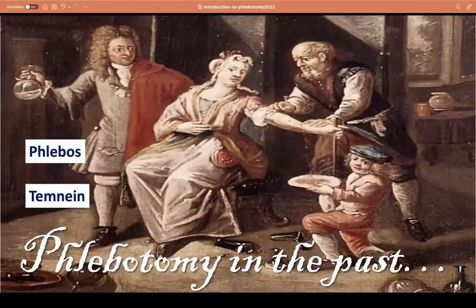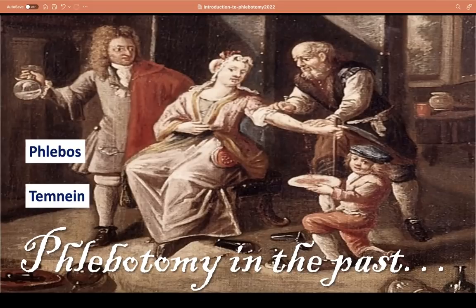For today's discussion, we have phlebotomy in the past. Phlebotomy is the process of extracting blood. It came from two Greek words: phlebos, meaning vein, and temne, which means to make a cut or incision. Originally, phlebotomy pertained to blood collection in the veins, but in current times, phlebotomy refers to all types of blood collection — venipuncture, arterial puncture, or skin or capillary puncture.